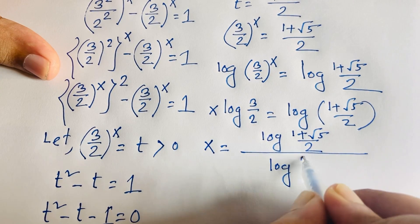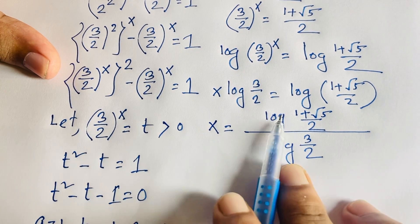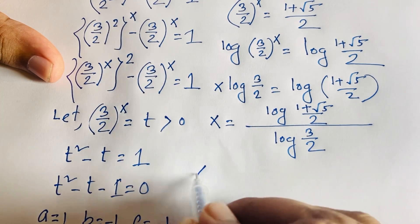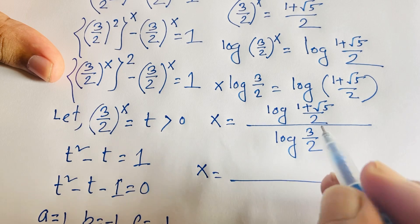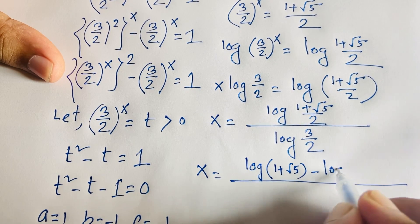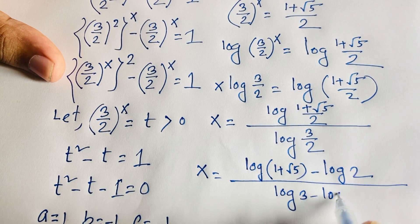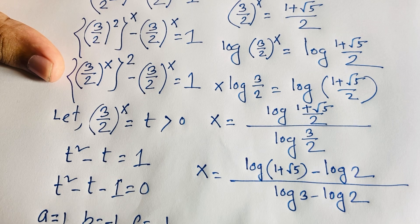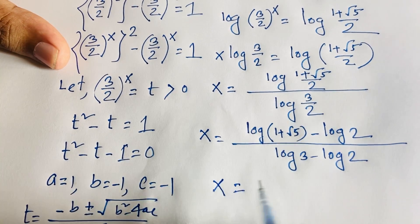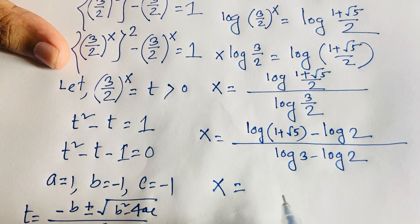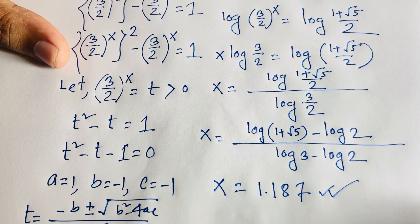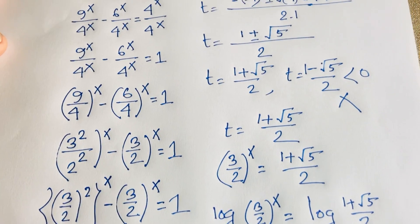This can be written as x equals log base (3/2) of ((1 plus √5)/2). Expanding using the log rule log(a/b) equals log(a) minus log(b): the numerator becomes log(1 plus √5) minus log 2, and the denominator becomes log 3 minus log 2. Using a calculator, the final answer is x approximately equals 1.187. Thank you all — if you enjoyed this video, please subscribe for more interesting videos. Goodbye!